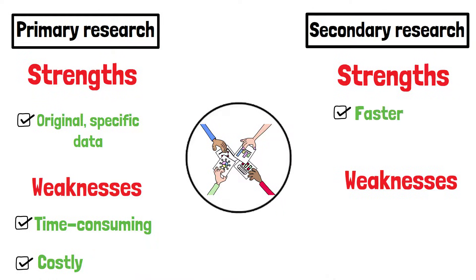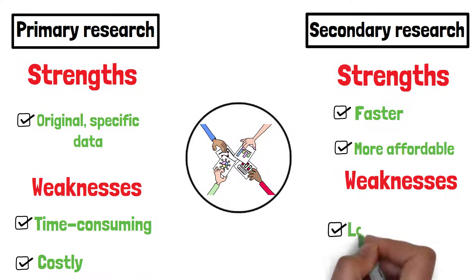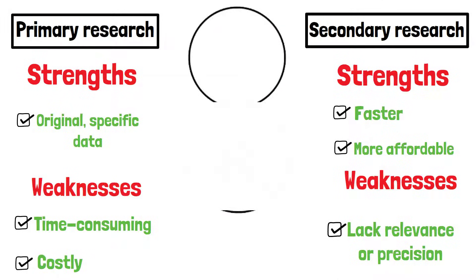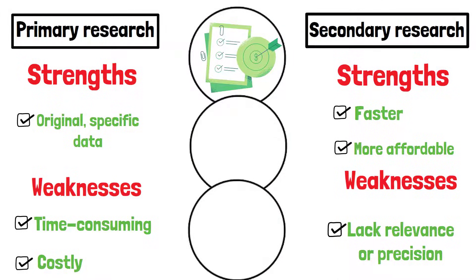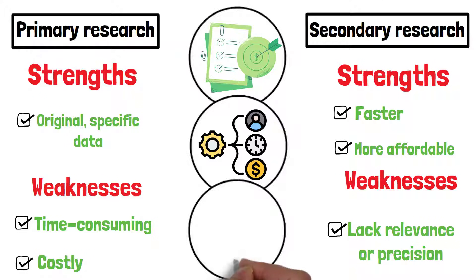Secondary research is faster and more affordable, but may lack relevance or precision. The choice between the two methods depends on the research goals, resources available and the type of data needed.